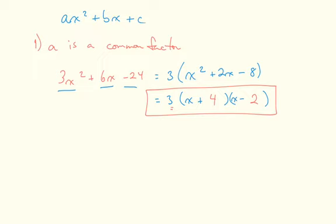It's the a value that we started with. So the second case where you might see, you might have a second variable. For example, you might get something like x² - 6xy + 5y².